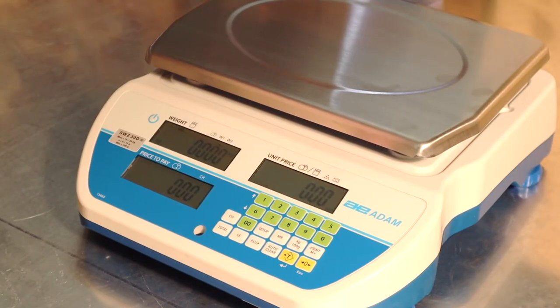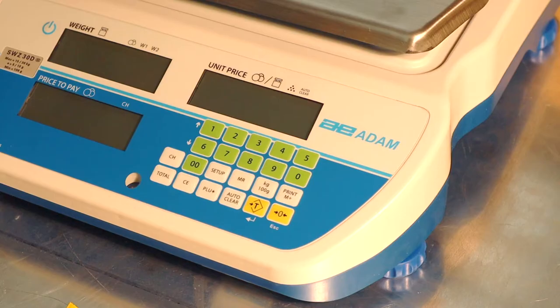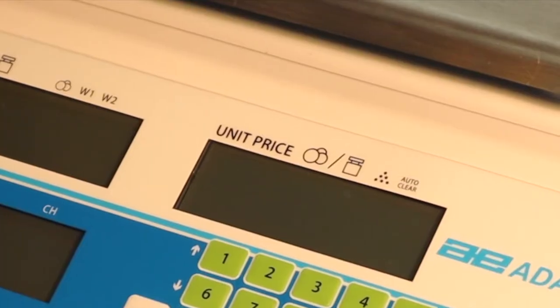This is Adam Equipment's easy-to-use retail scale, the Swift. The Swift is portable, accurate, and easy to use, and makes getting an item's price based on its weight extremely straightforward.